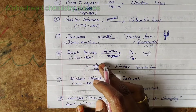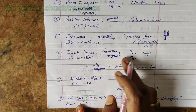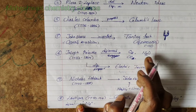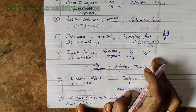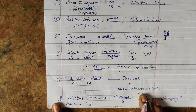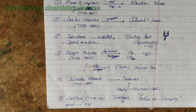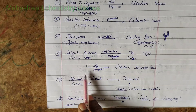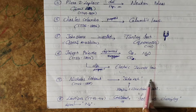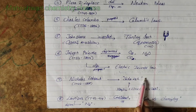Joseph Priestley discovered oxygen, carbon monoxide, and nitrogen oxide. Joseph Priestley also proposed the electric inverse square law.